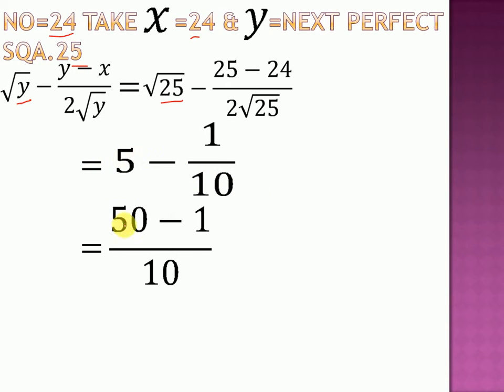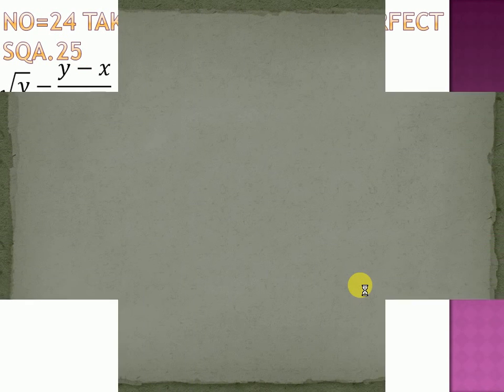Multiply by 10, so 50 minus 1 upon 10, so the answer is 49 upon 10. So we will get 4.9. So it is the best and simple way to find the square root of an imperfect square.